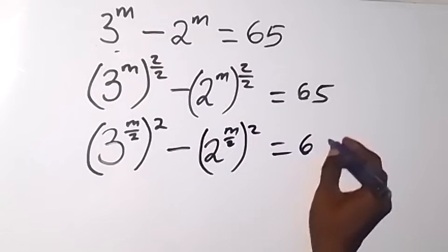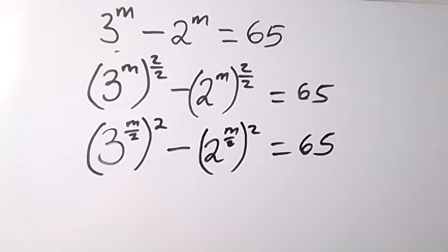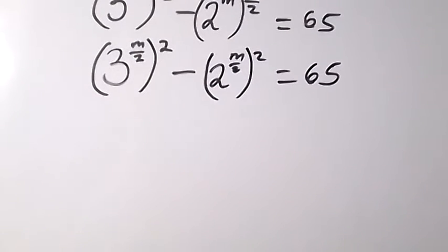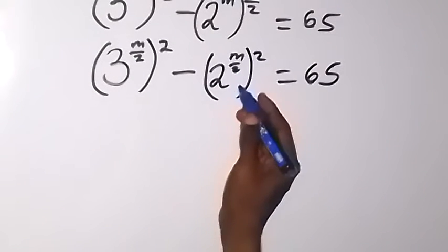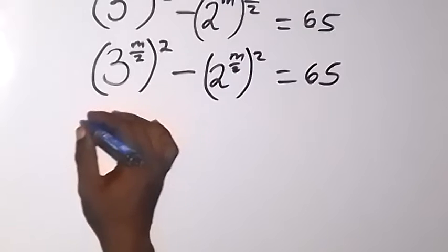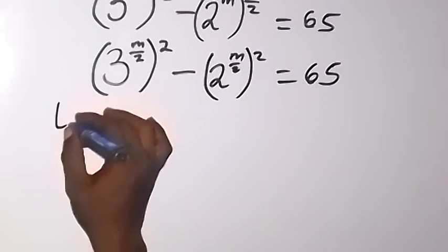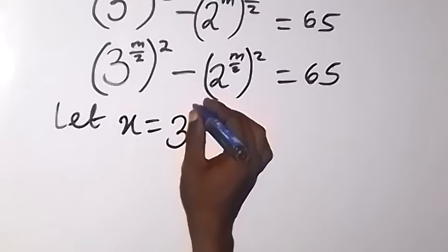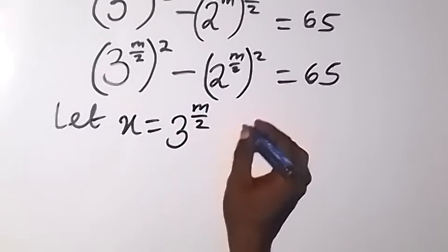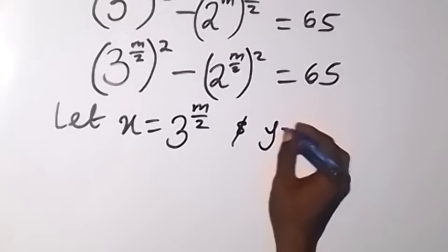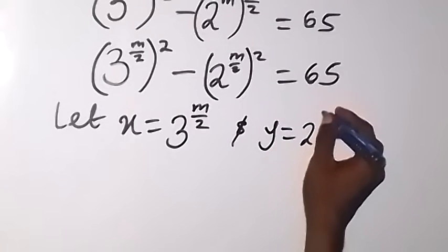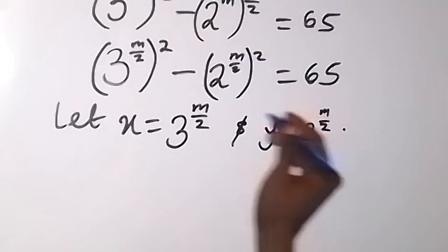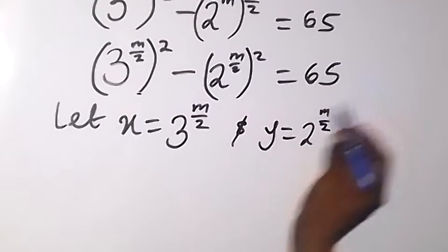Let us use a letter to represent 3 raised to the power m over 2, and also use a letter to represent 2 raised to the power m over 2. So let x equal 3 raised to the power m over 2, and let y equal 2 raised to the power m over 2. Then we can write this equation in terms of x and y.